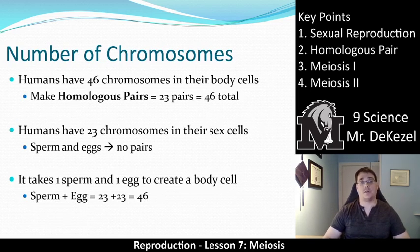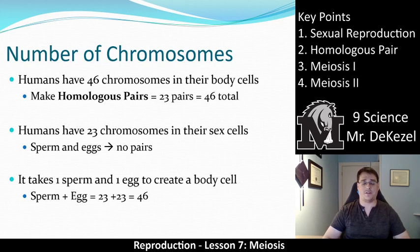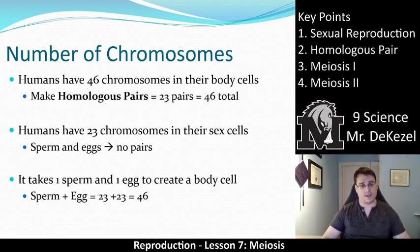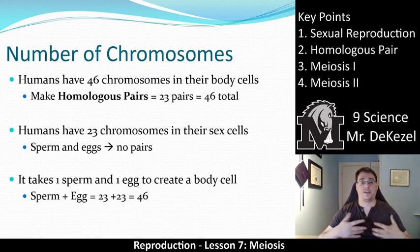Humans have 46 chromosomes in their body cells, and they're actually in pairs called homologous pairs. So we have 23 homologous pairs, which makes 46 chromosomes total. Humans have 23 chromosomes in their sex cells — sperm for males and eggs for females — there are no pairs, just the one set. It takes one sperm and one egg to create a body cell. A sperm and an egg each have 23 chromosomes, and when they come together we add their chromosomes to get a full 46. That 46-chromosome cell can then proceed to split through mitosis to produce a human eventually.